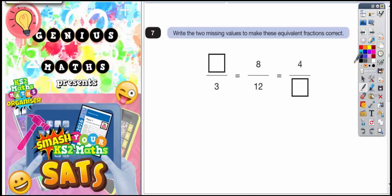Question 7 is all about equivalent fractions. There's the key words. Write the two missing values to make these equivalent fractions correct.